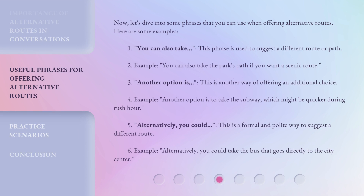Now, let's dive into some phrases you can use when offering alternative routes. Here are some examples. You can also take the park's path if you want a scenic route. Another option is — this is another way of offering an additional choice. For example: another option is to take the subway, which might be quicker during rush hour.